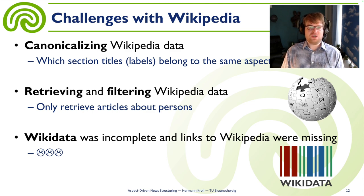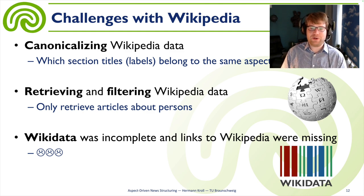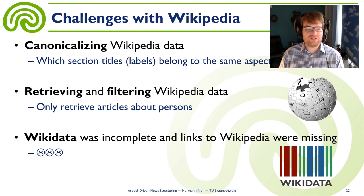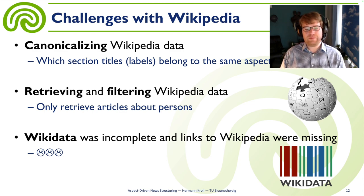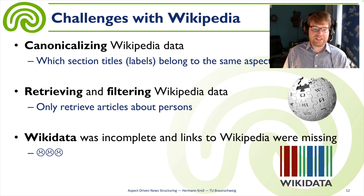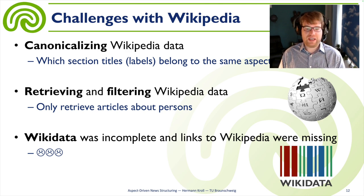We observed some challenges when working with Wikipedia data. Canonicalizing Wikipedia data is sometimes unclear — determining which section titles belong to the same aspect was one issue. We also had to crawl the whole Wikipedia and filter for articles about persons using automatic rules. Additionally, Wikidata was too incomplete, especially links to the Dutch Wikipedia were missing, so we could not use it at all.